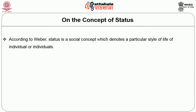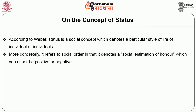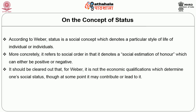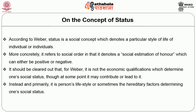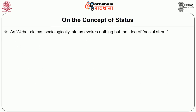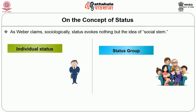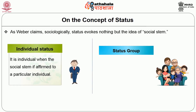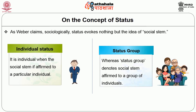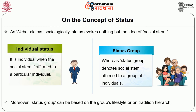On the concept of status, according to Weber, status is a social concept which denotes a particular style of life of an individual or individuals. More concretely, it refers to social order in that it denotes a social estimation of honor, which can either be positive or negative. It should be noted that for Weber it is not economic qualification which primarily determines one's social status — though at some point it may contribute to it. Instead, it is a person's lifestyle or sometimes hereditary factors that determine one's social status. Sociologically, status evokes the idea of social esteem. It can be of two types: individual status and status group. It is individual when social esteem is affirmed to a particular individual, whereas status group denotes social esteem affirmed to a group — say, a particular family or class. Moreover, a status group can be based on the group's lifestyle or on traditional hierarchy.